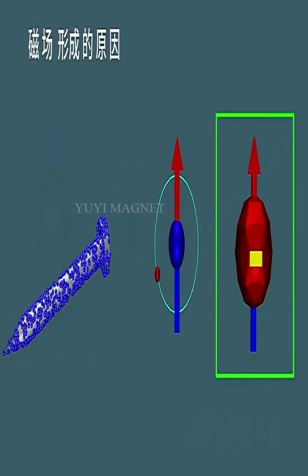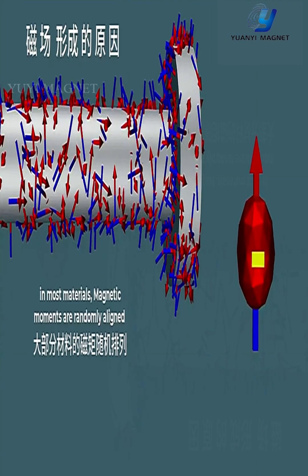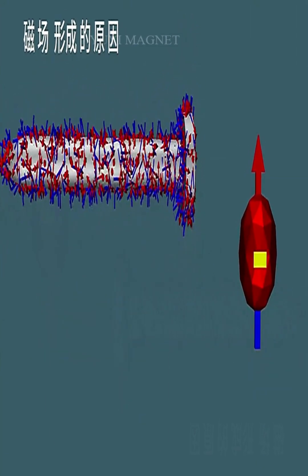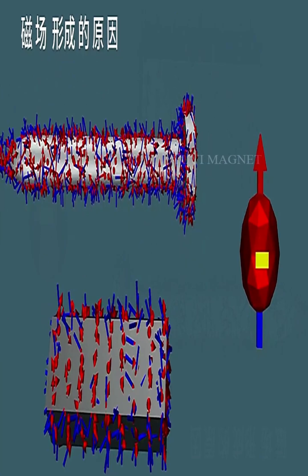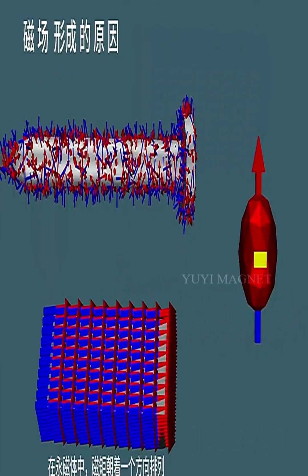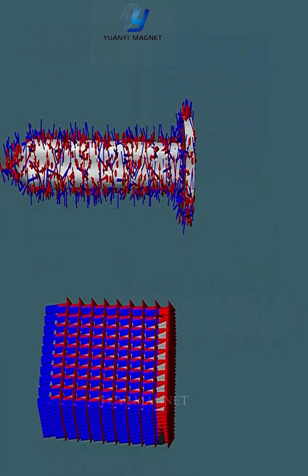Electromagnets are made by winding wire coils around an iron magnetic core. When electricity flows through, it generates a magnetic field. Once the current stops, the magnetism vanishes.